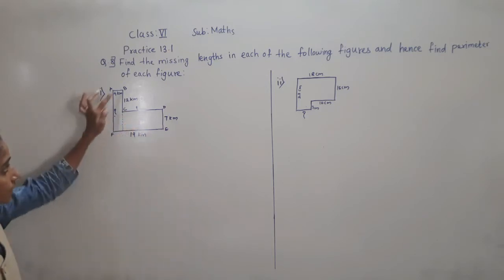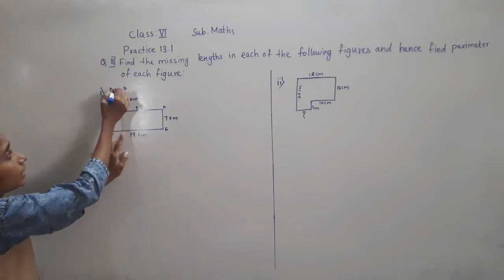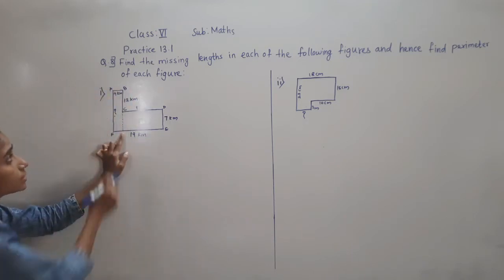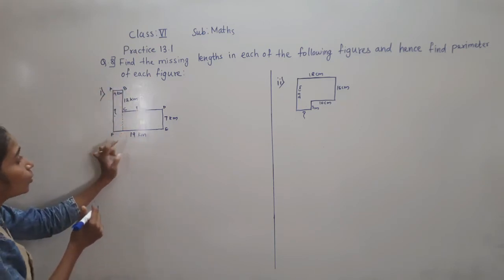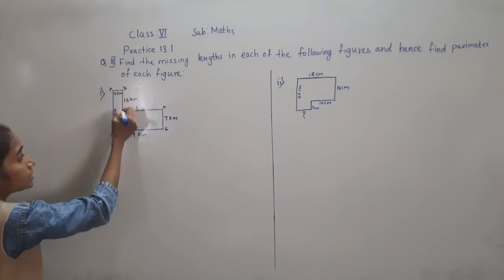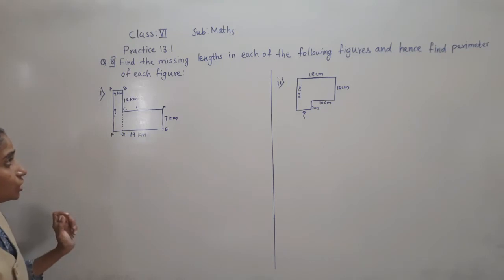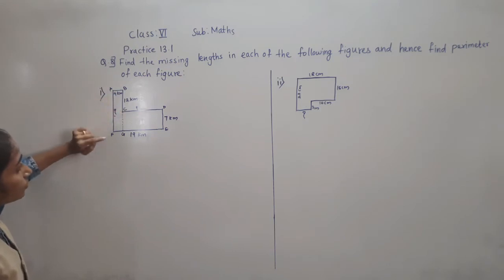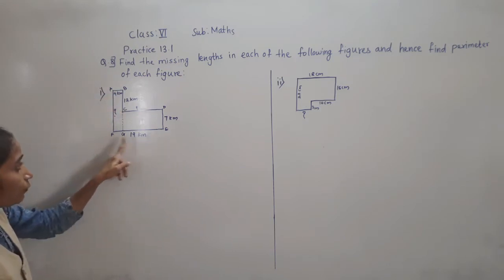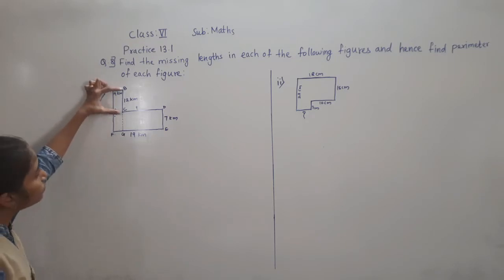I will extend BC till here. Now if you look at AB — AB is given 4 km. I extend BC and here I will give the name G. I extend BC till point G, near E and F.